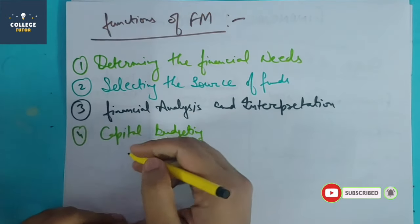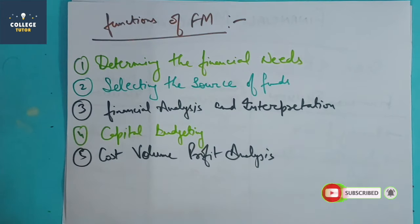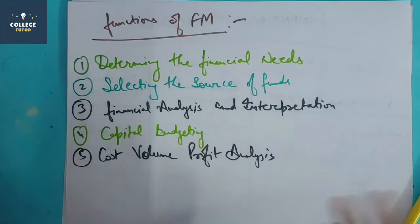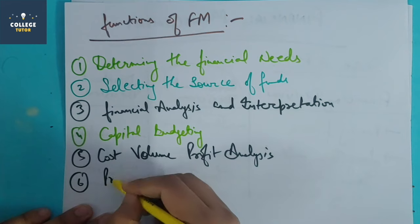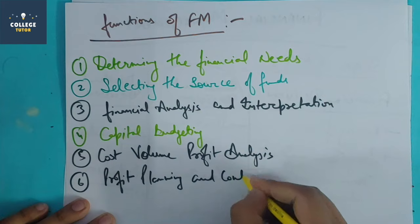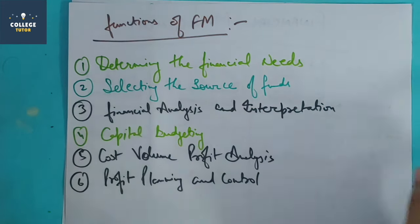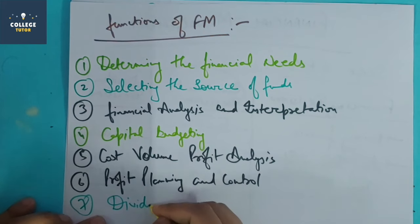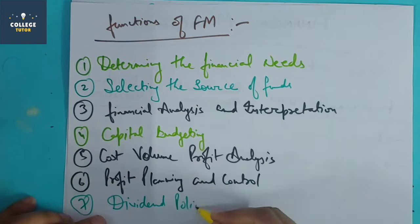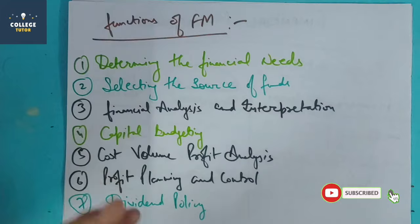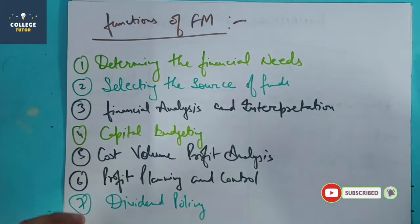Next is cost-volume-profit analysis — finding the optimal volume that gives minimum cost and maximum profit. Above all, profit planning and control covers how to plan and manage profit effectively. These are all key functions of financial management.